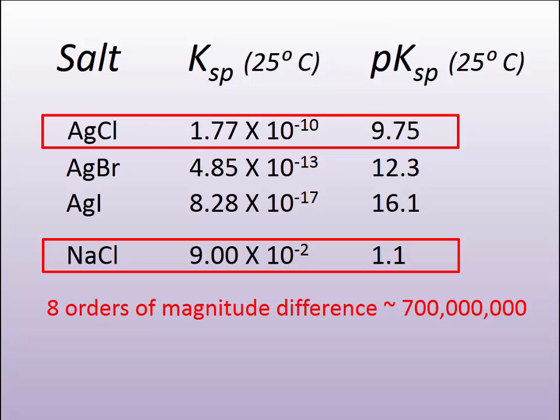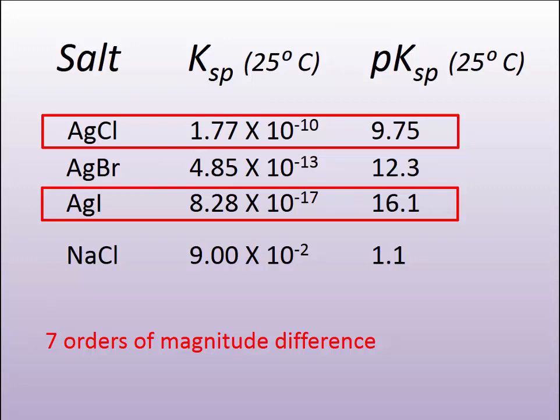So there's 8 factors of 10 difference, or that's 700 million roughly. That's 700 million time difference in the solubility between silver chloride and sodium chloride. And there's even an additional 7 orders of magnitude difference between silver chloride and silver iodine.